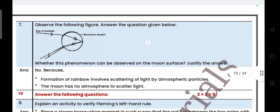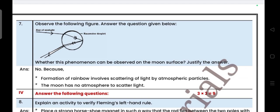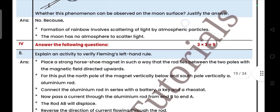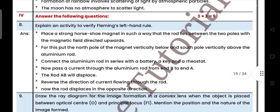Observe the following figure and answer the following question. Whether this phenomenon can be observed on the moon surface? Justify the answer. No, because formation of rainbow involves the scattering of light by atmospheric particles. The moon has no atmosphere to scatter the light. Next question, answer the following question. Question number eight, explain an activity to verify Fleming's left hand rule.